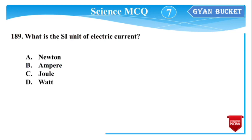Next question: What is the SI unit of electric current? The SI unit of electric current is Ampere — option number B.